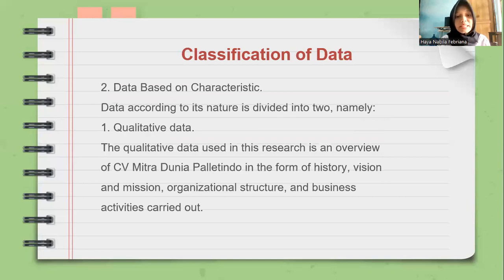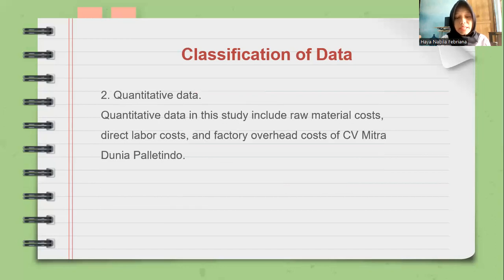The second is data based on characteristics. Data according to its nature is divided into qualitative data and quantitative data. The qualitative data used in this research is an overview of CV Mitra Dunia Palitindo in the form of history, vision and mission, organizational structure, and business activities. The quantitative data in this study includes raw material costs, direct labor costs, and factory overhead costs of CV Mitra Dunia Palitindo.